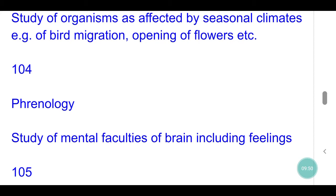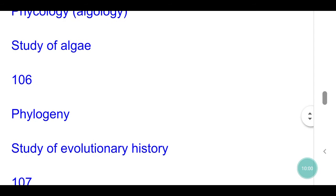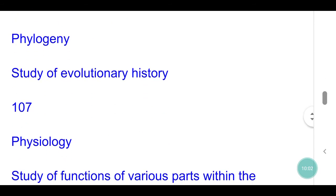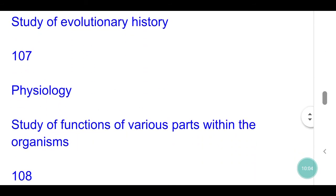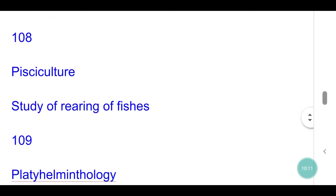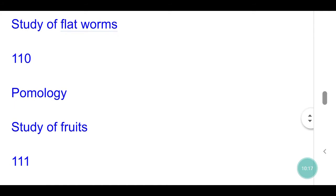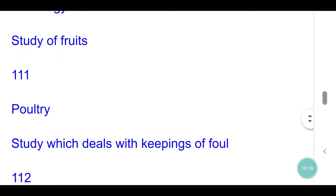Psychology: study of mental faculties of brain including feelings. Phycology: study of algae. Phylogeny: study of evolutionary history. Physiology: study of functions of various parts within organisms. Pisciculture: study of rearing of fishes. Platyhelminthology: study of flat worms. Pomology: study of fruits.